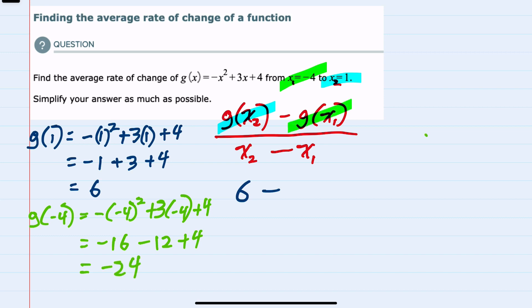So replacing g(−4) with negative 24, we have 6 minus (−24). In the denominator, we've already said that x₂ is 1 and x₁ is negative 4, so it's 1 minus (−4). We can simplify the numerator to 6 plus 24,